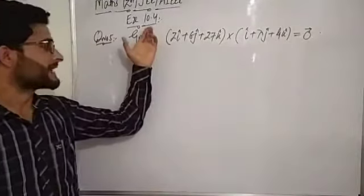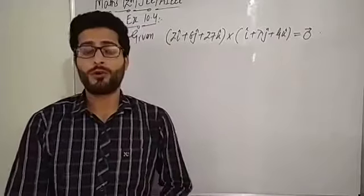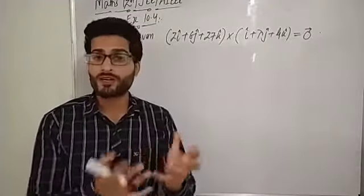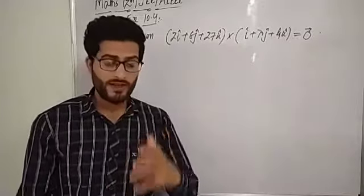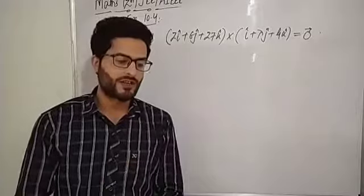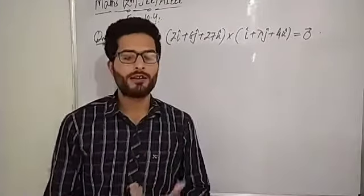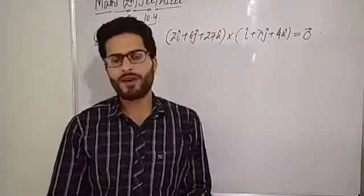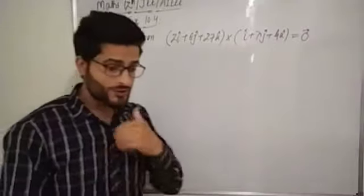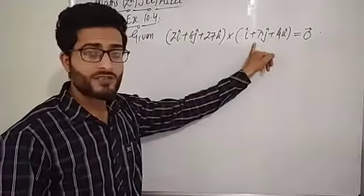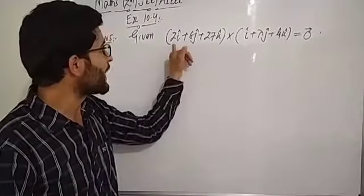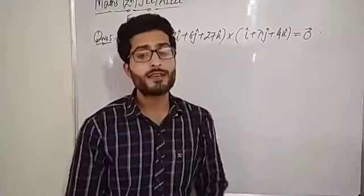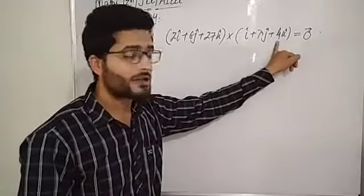In exercise 10.4, we need concepts of cross product of vectors: cross product in terms of rectangular components, angle between two vectors, unit vector perpendicular to two vectors, Lagrange's identity, area of triangle, area of parallelogram, and area of rectangle. In question five, we have been given the cross product of (2i + 6j + 27k) and (i + λj + μk) is equal to a zero vector. We need to find λ and μ.